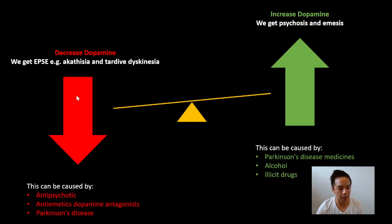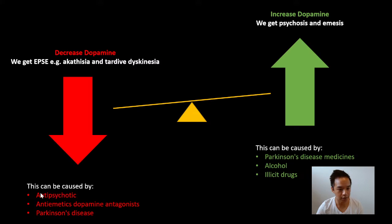When we decrease dopamine — and this can be for any reason — it can be because they've taken an antipsychotic medicine, a dopamine antagonist that works as an anti-nausea medicine, or simply because they have Parkinson's disease. In any of these situations, they can potentially get extrapyramidal side effects, which is essentially the movement disorder of Parkinson's disease — such as akathisia and tardive dyskinesia. High doses of these medicines can cause drug-induced Parkinson's disease because in all these cases we're decreasing dopamine.